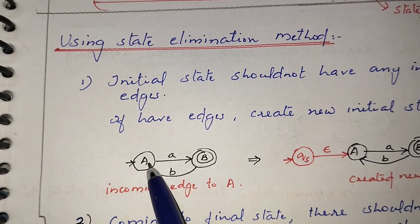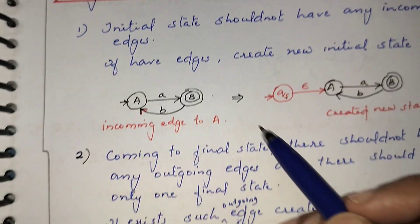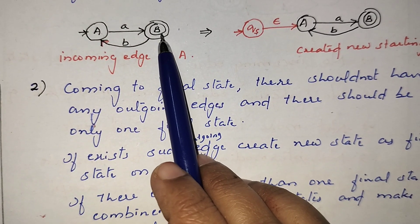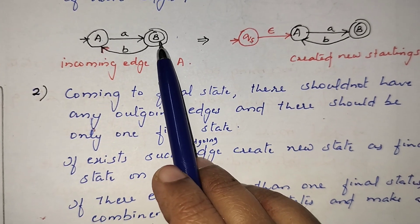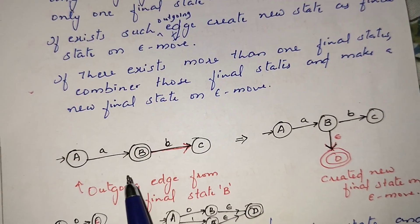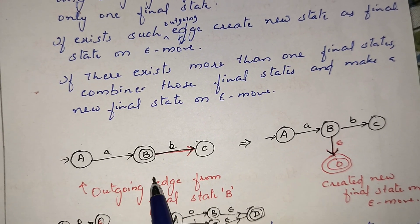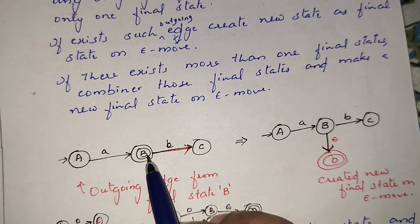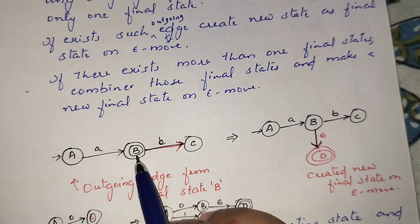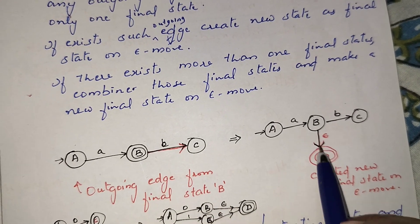The second rule is about the final state. In the given automata, there should be only one final state and it should have no outgoing edges. If there is any outgoing edge from the final state, we need to create a new final state with an epsilon move. The existing final state then becomes a non-final state.